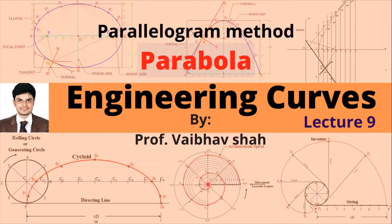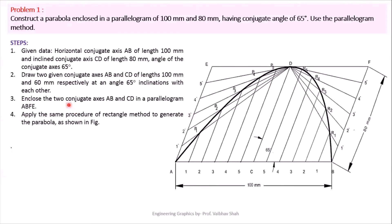Let us start. Problem 1: Construct a parabola enclosed in a parallelogram of 100 mm by 80 mm having a conjugate angle of 65 degrees. Use the parallelogram method to draw your parabola. Before moving ahead, we must understand what a parallelogram is, so let us understand it by this diagram.